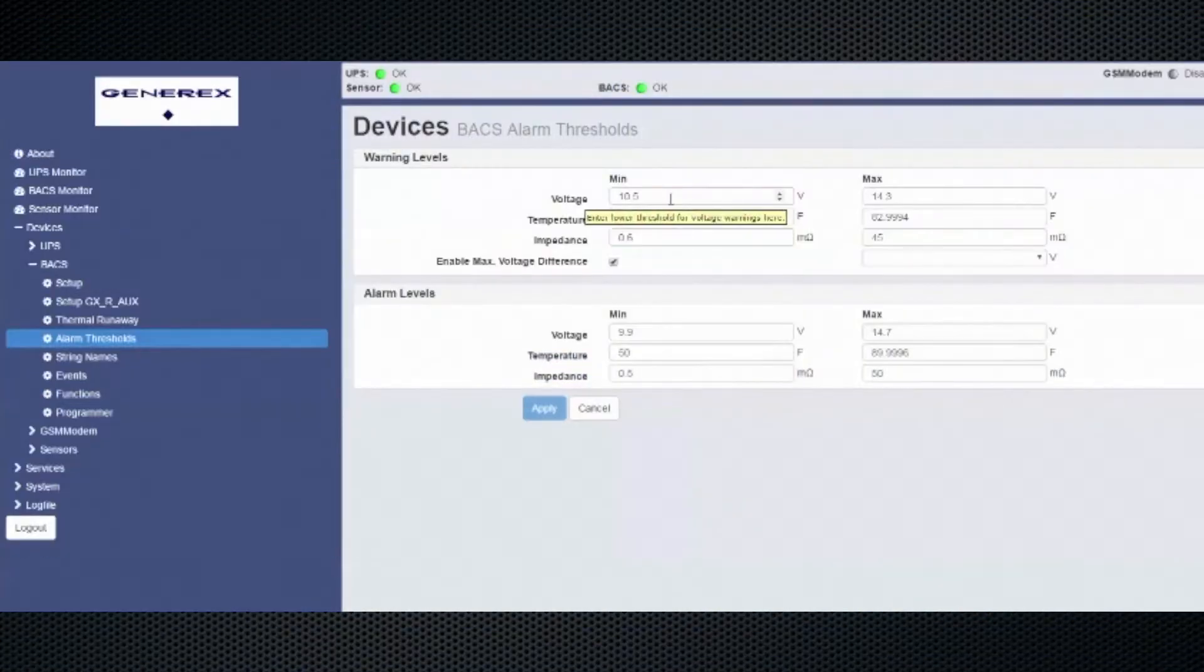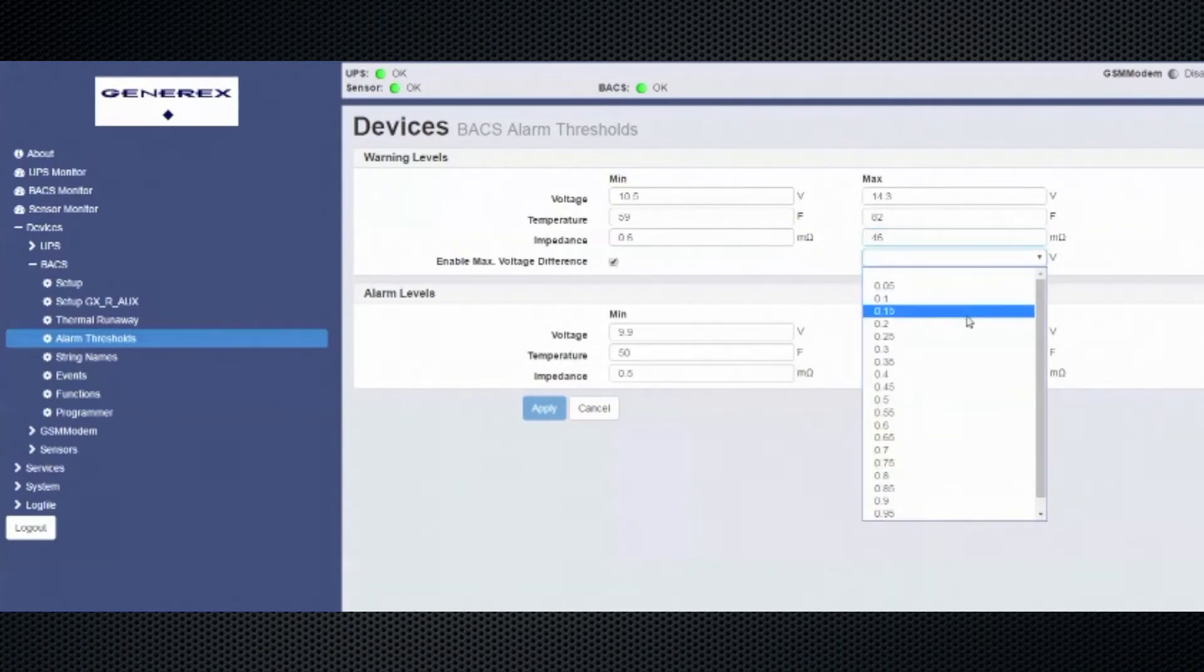This section shows the Bax thresholds on the web manager. From here you can set warning levels for voltage, temperature, and impedance. You can set a voltage difference alarm using the drop down menu. You can also set alarm levels on voltage, temperature, and your impedance values. Once those changes are made, click apply.